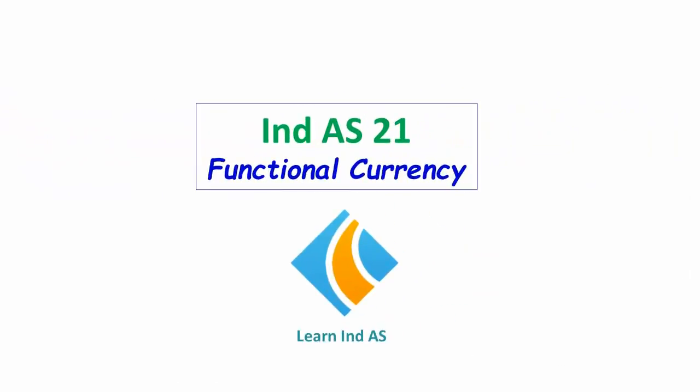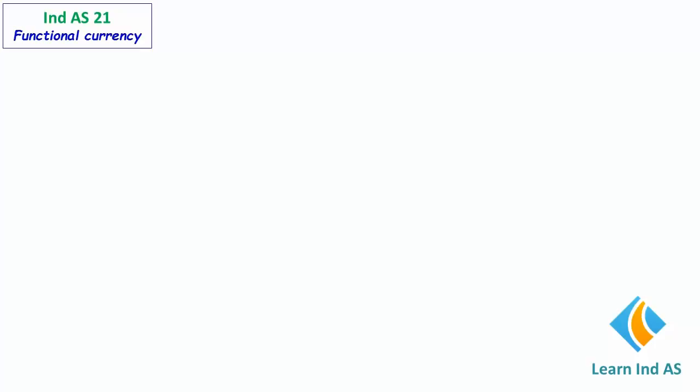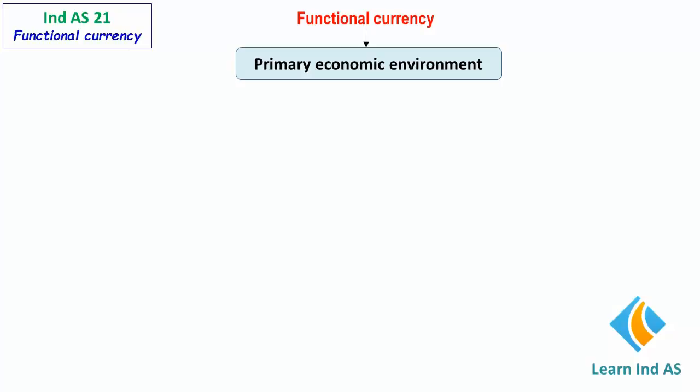In this video, let us see how the functional currency is determined for an entity. Functional currency is determined based on the primary economic environment in which it operates. The primary economic environment is determined based on two primary factors as specified in the standard: namely, the currency in which cash is generated, and the currency in which major expenses are incurred by the entity.